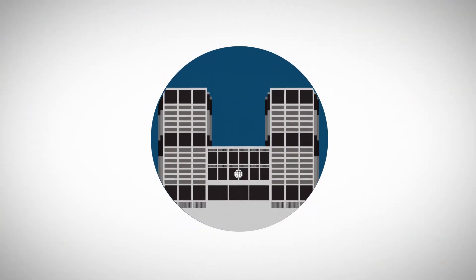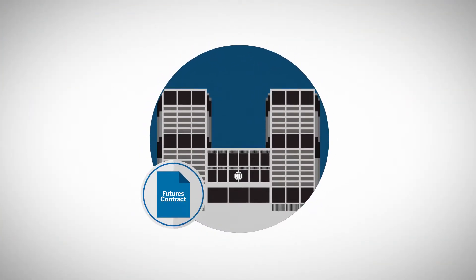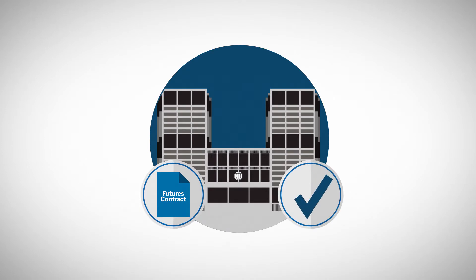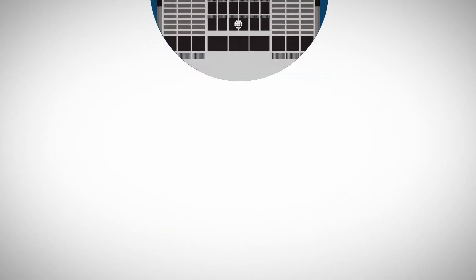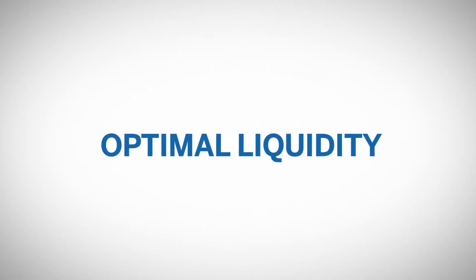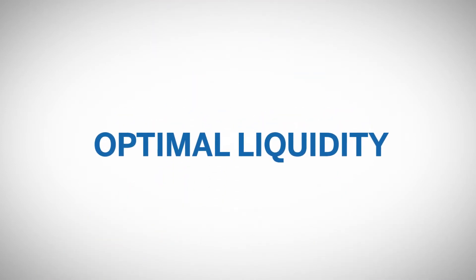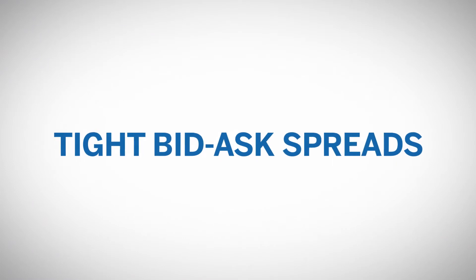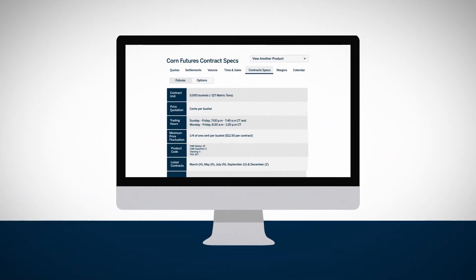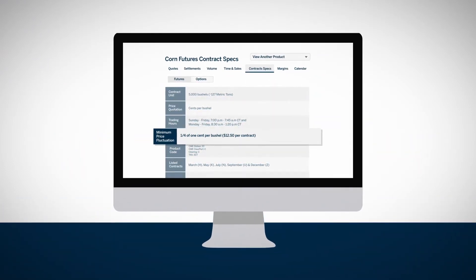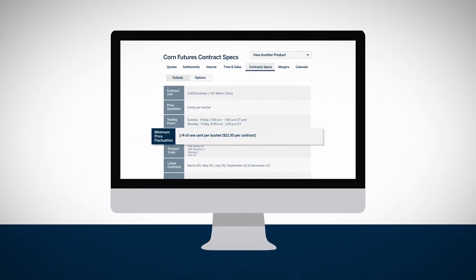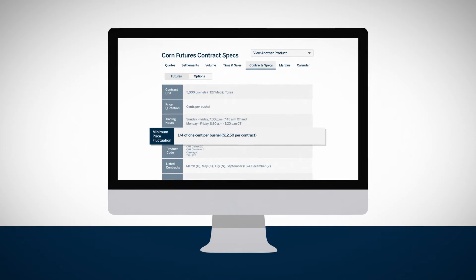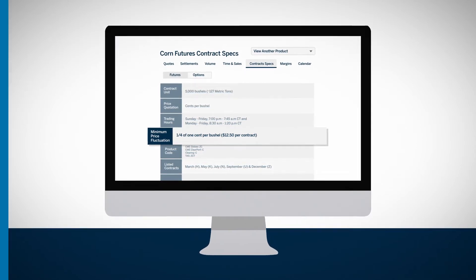Tick sizes are defined by the exchange and vary depending on the size of the financial instrument and requirements of the marketplace. Tick sizes are set to provide optimal liquidity and tight bid-ask spreads. The minimum price fluctuation for any CME Group contract can be found on the product specifications page.